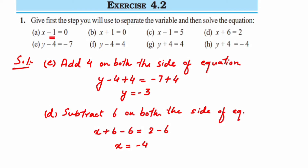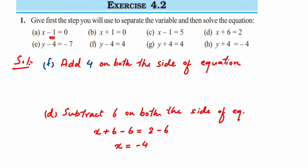Part (f): y minus 4 is equal to 4. This is similar — we add 4 on both sides so that minus 4 plus 4 gets cancelled. y minus 4 plus 4 is equal to 4 plus 4, so y is equal to 8.